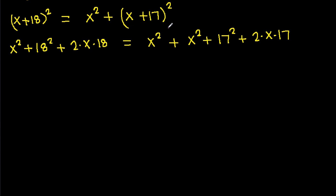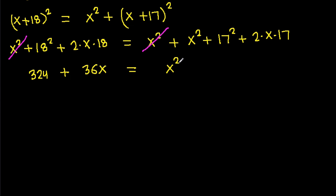So x² + 324 + 36x equals x² + 289 + 34x.